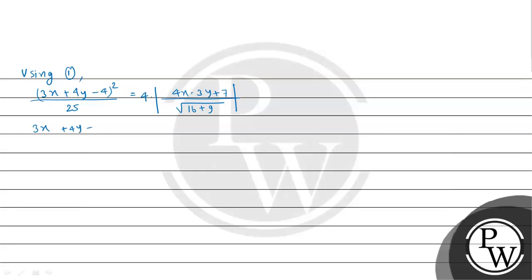This equals (3x + 4y - 4)² / 25 = 4 × |4x - 3y + 7| / 5. Simplifying, we get (3x + 4y - 4)² / 25 = 4|4x - 3y + 7| / 5. The 25 and 5 cancel.